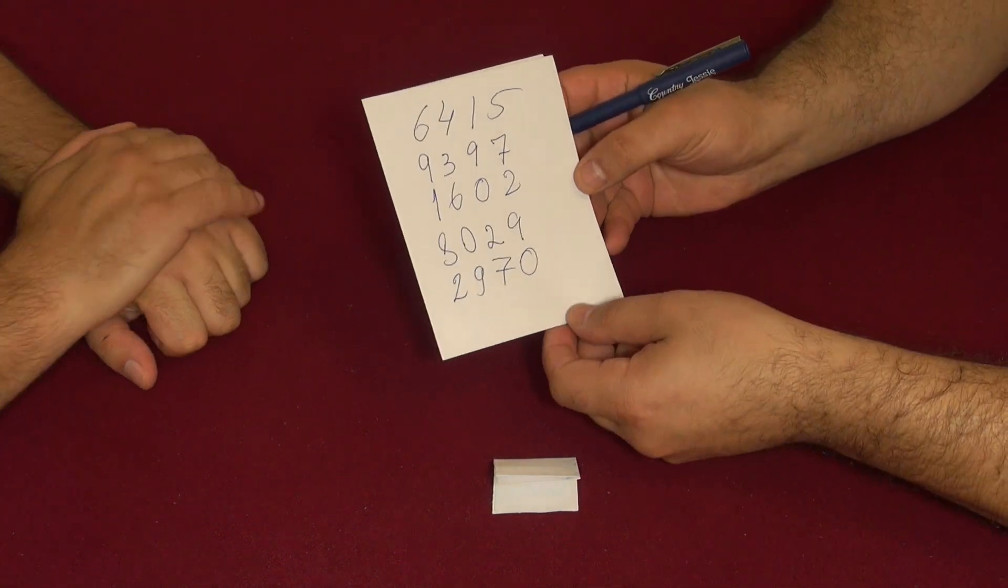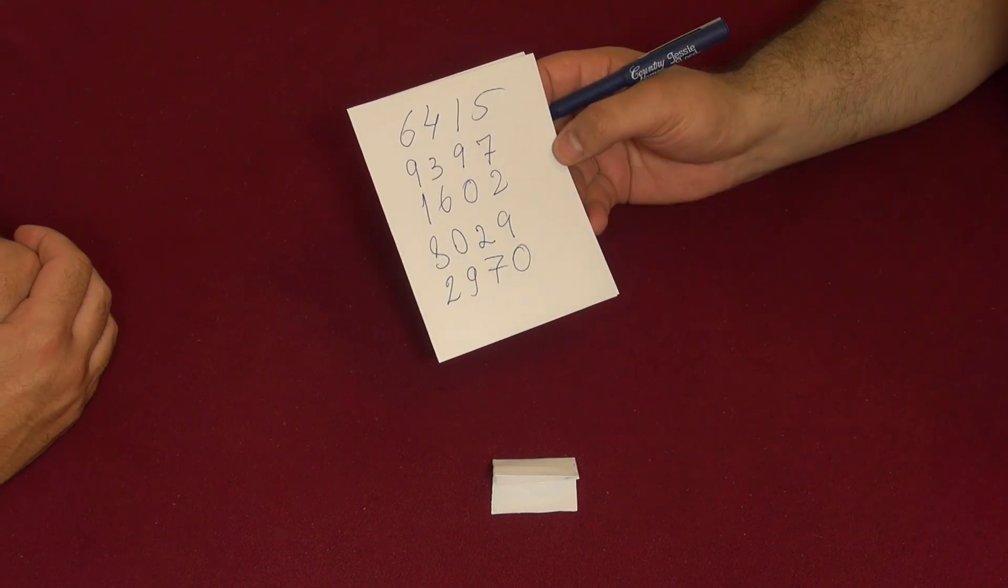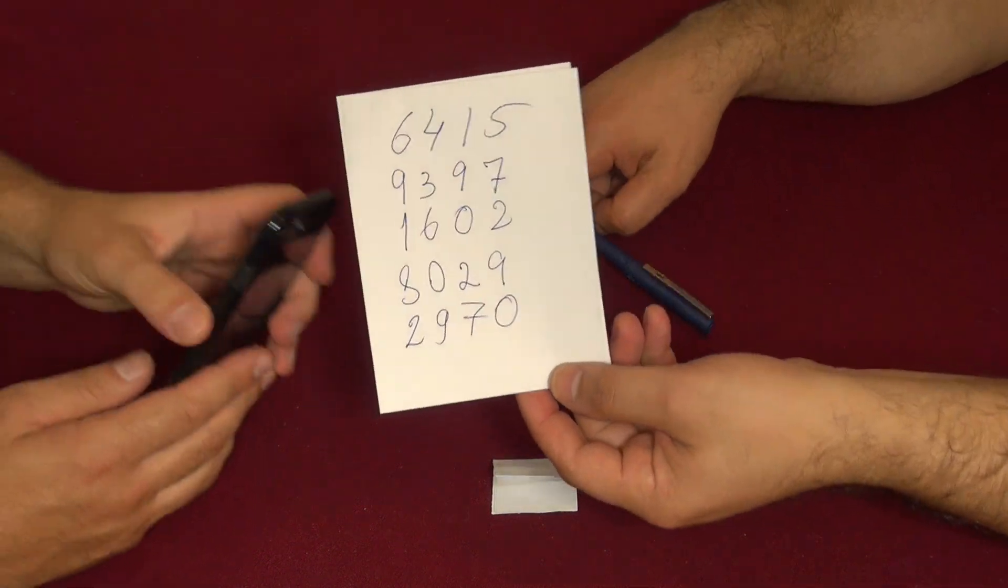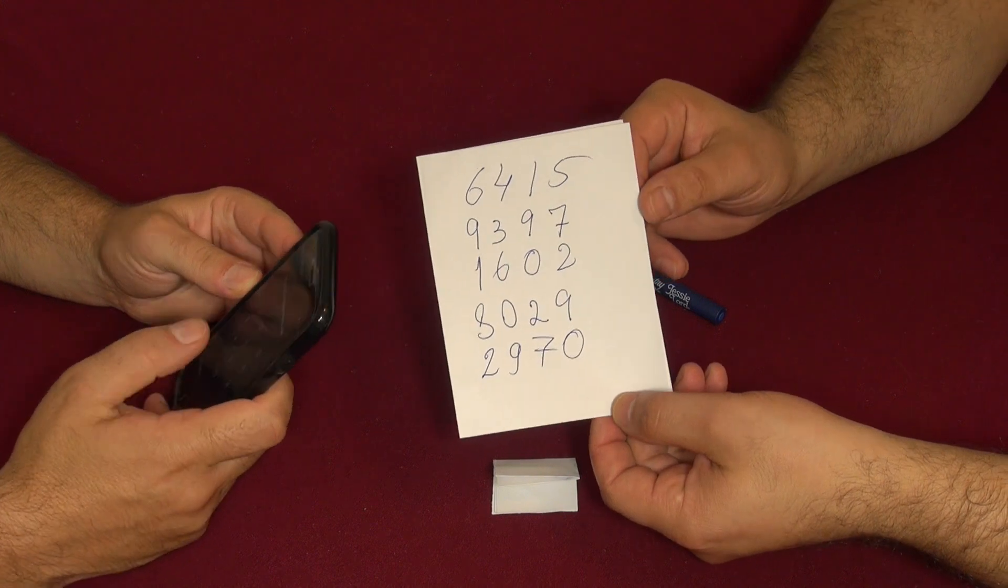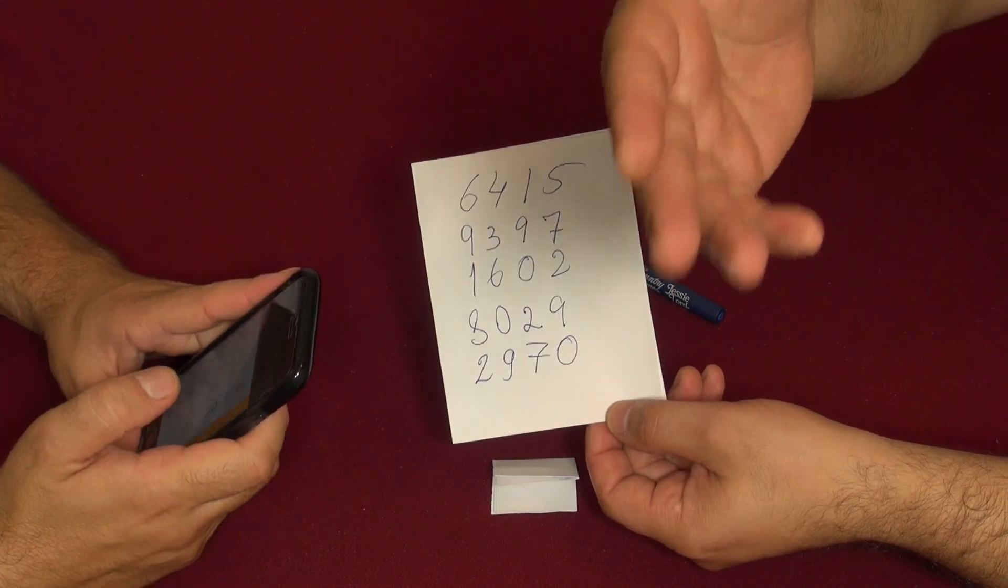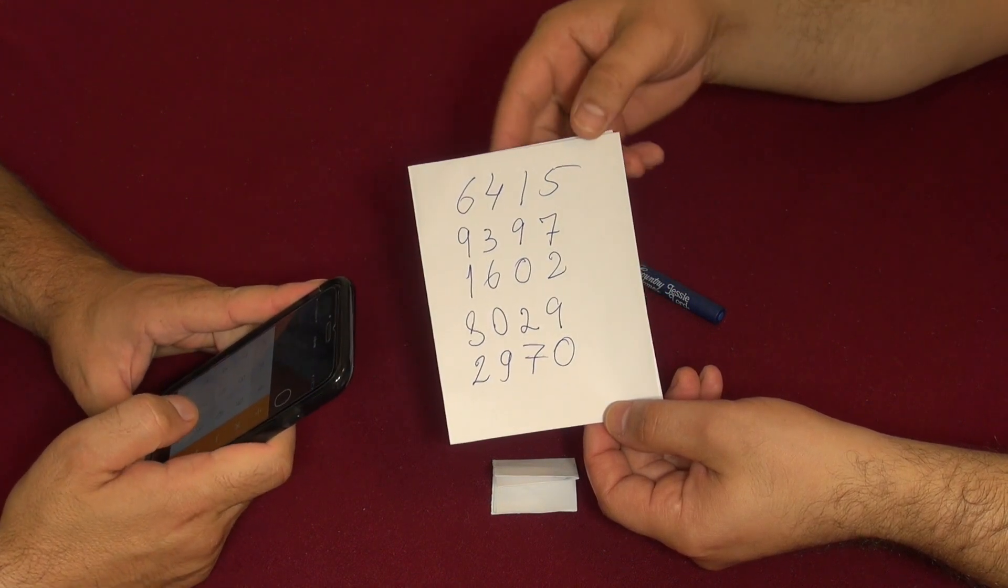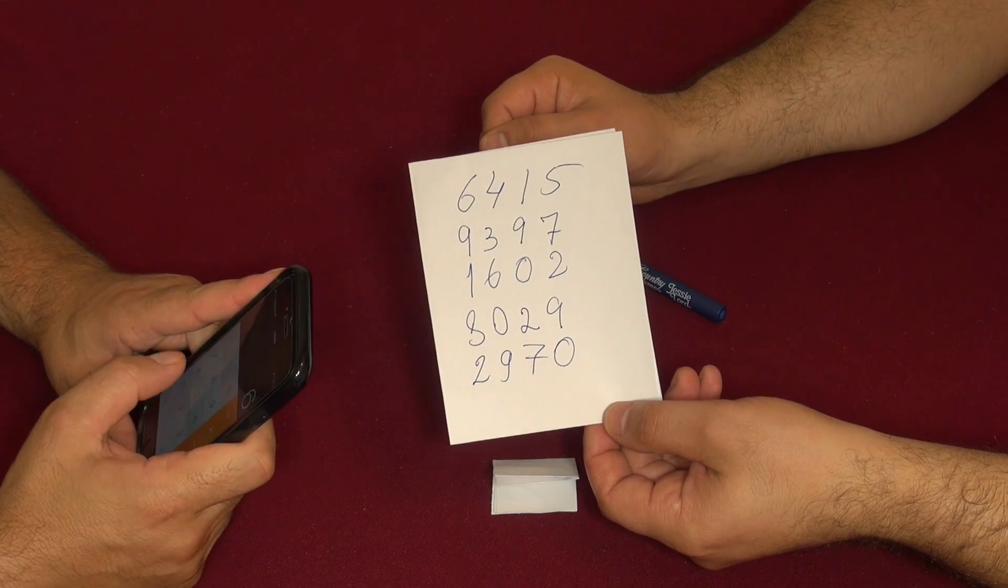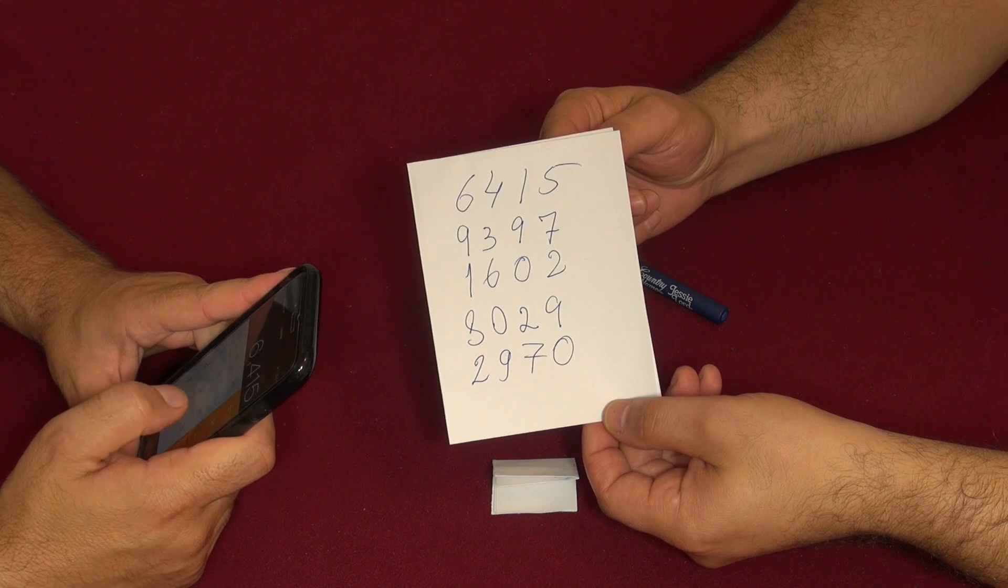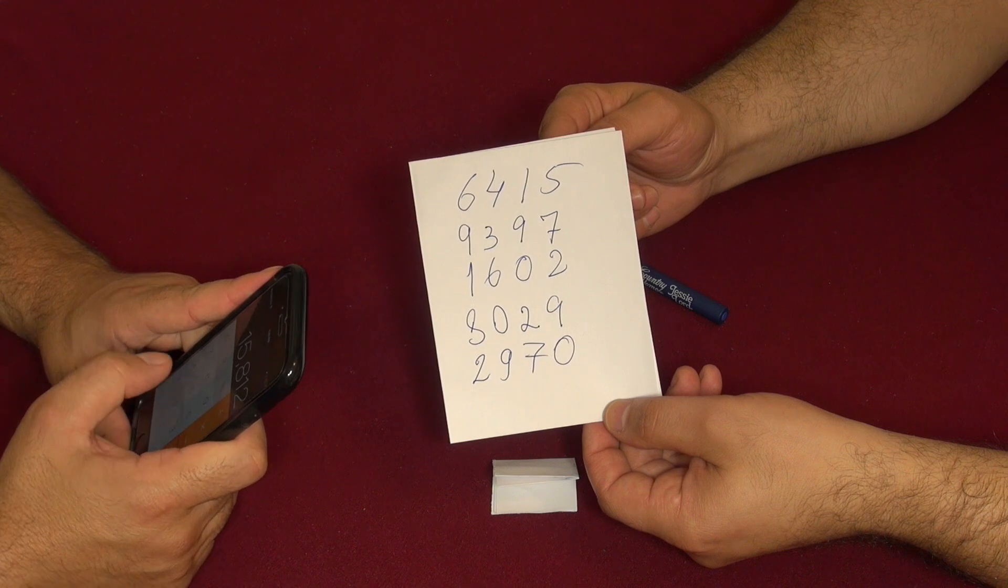And now what I want you to do is I want you to add all these numbers together. So take the calculator. I hope you guys see the numbers well, and I'm gonna dictate you the numbers and add them together. By the way, you guys calculate these numbers together with us. All right, so 6415 plus 9397 plus 1602.